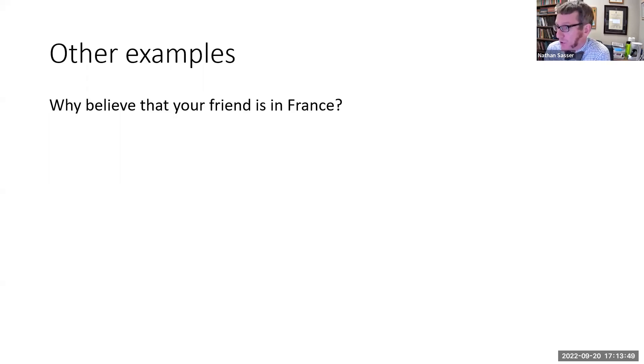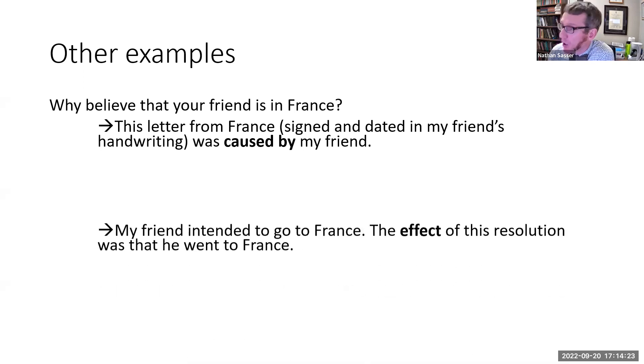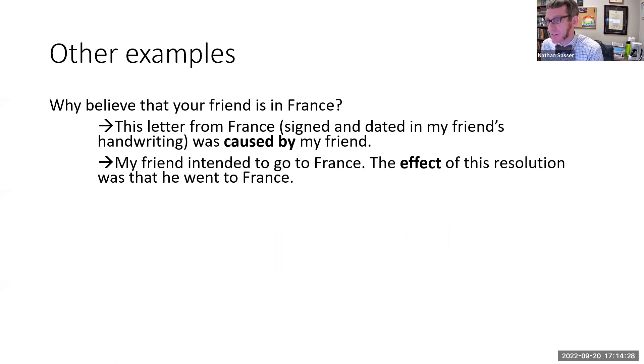And he gives us some further examples. Why, for example, do you believe that your friend is currently in France? The answer might be that you've got a letter from your friend with what appears to be your friend's signature and date in your friend's handwriting. And you infer this letter, including its signature and date, was caused by my friend. Why? Because you know what causes handwriting that looks like this - it's my friend who does that. So you know the causal relationship between the letter you've got and the friend you don't see. And on that basis, you can infer where your friend is. Or maybe you remember hearing him say that your friend intended to go to France. And you infer based on that, my friend's intention probably caused him to actually go to France. The effect of his resolution was that he went to France. So again, you know where he is because you know about the causal relationship between something you remember and something that you don't currently observe.